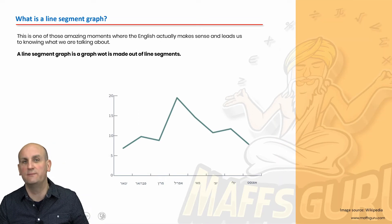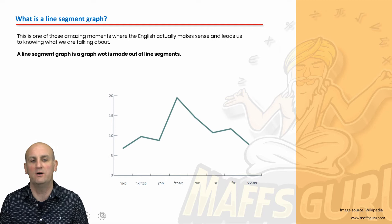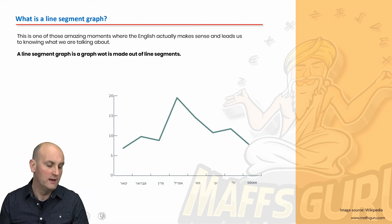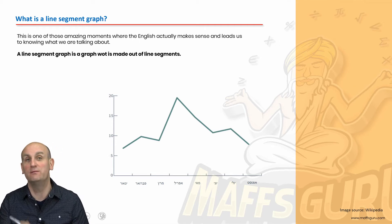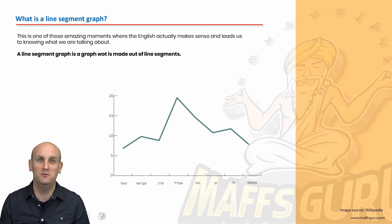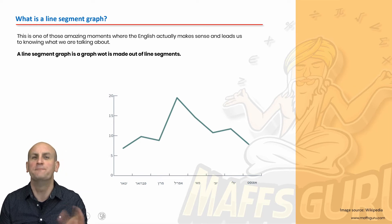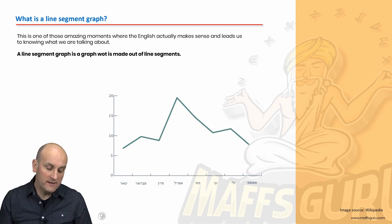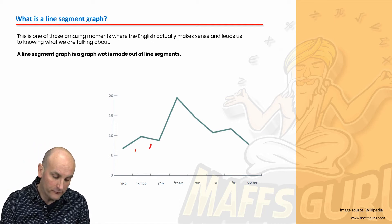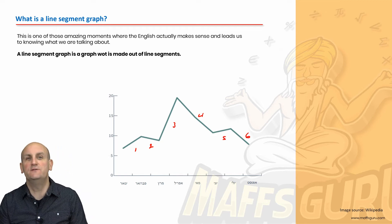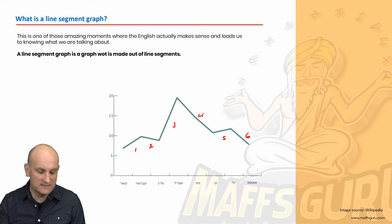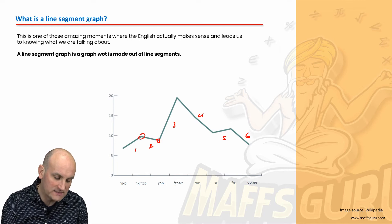So what is a Line Segment Graph? There is an example of a Line Segment Graph. Math is awesome because a Line Segment Graph is a graph that is made out of line segments. This graph here has one, two, three, four, five, six individual line segments, and you can see they're all joined to each other at a particular point.